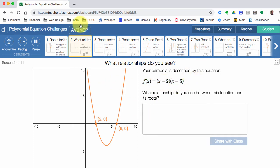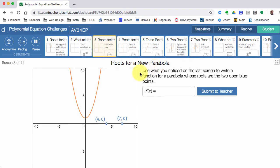So you're going to explore some of that and continue on. Now let's look at a different one. Use what we noticed on the last screen to write a function for a parabola whose roots are the two open blue points. This time I have x is 4, I get a y value of 0, and if x is 7, I get a y value of 0.